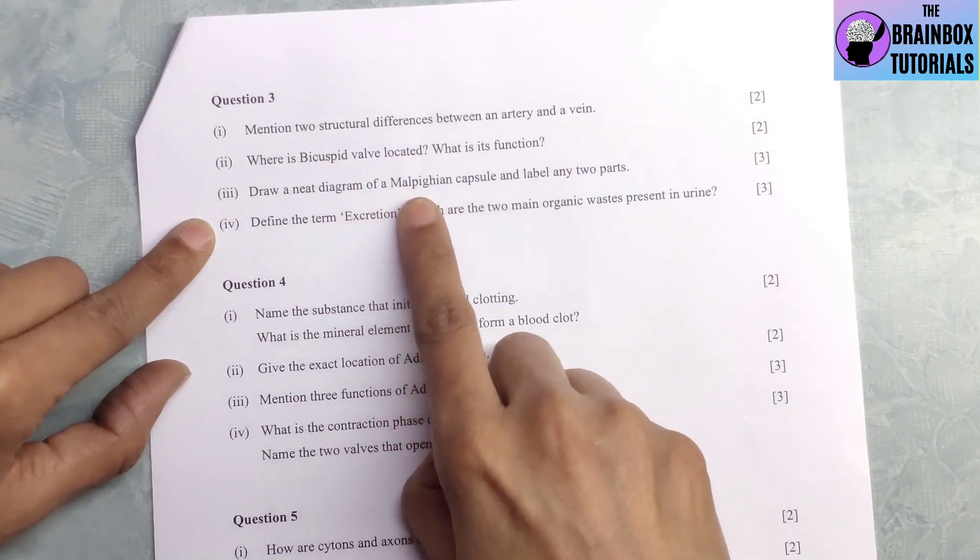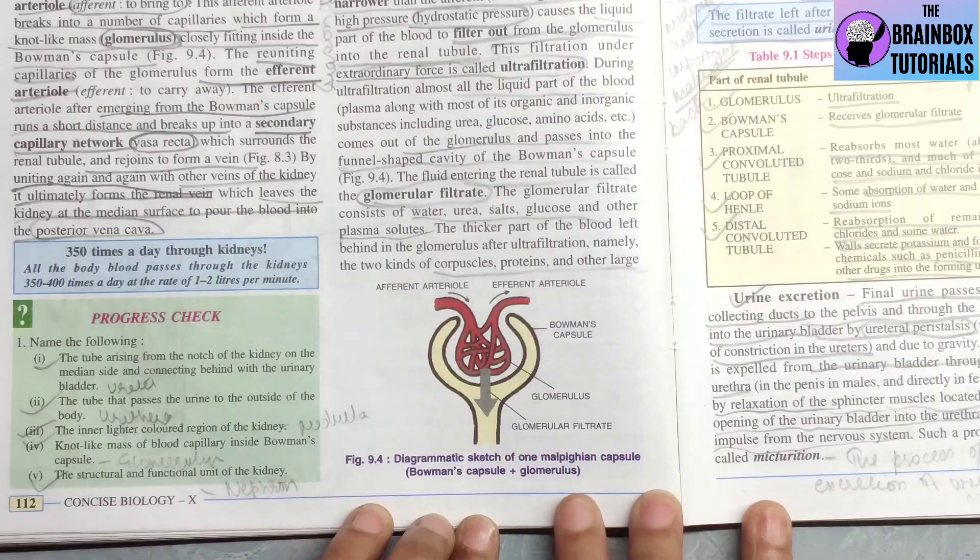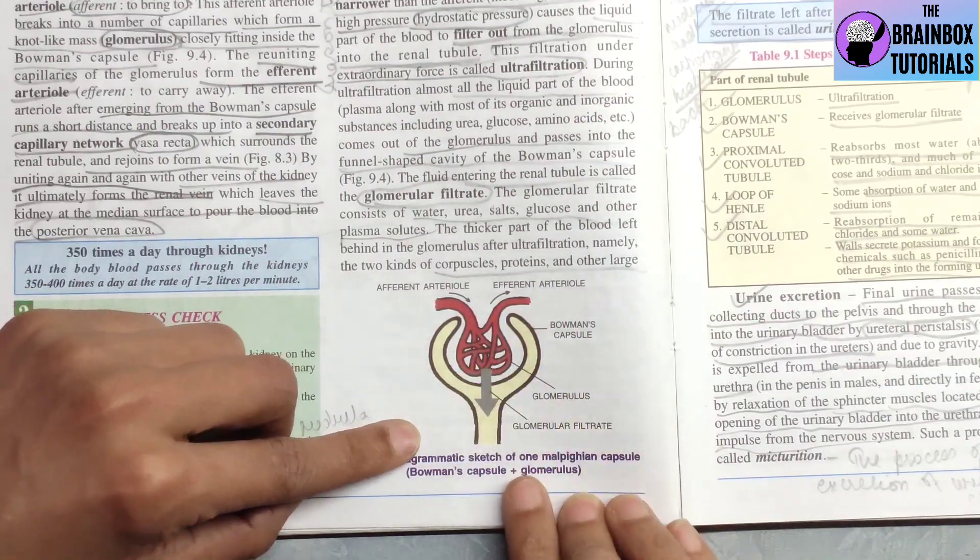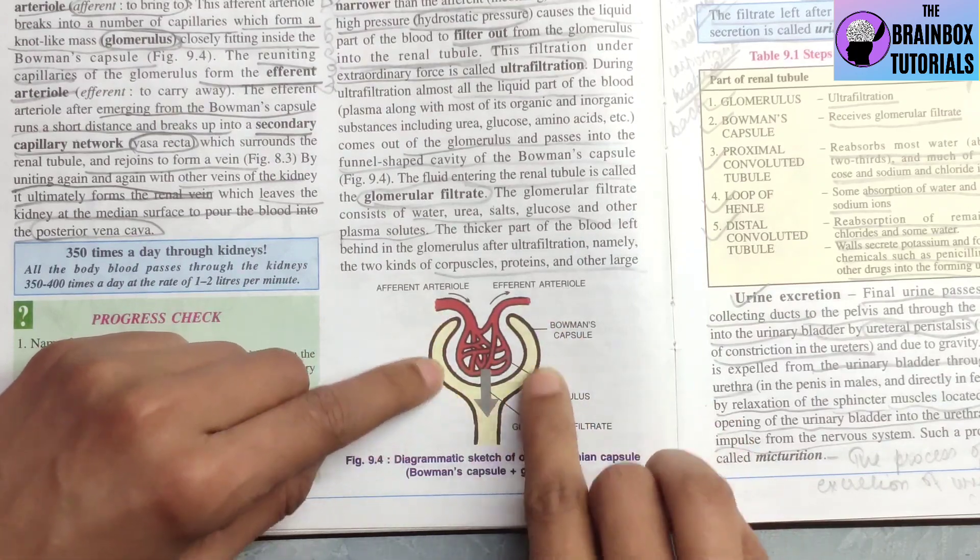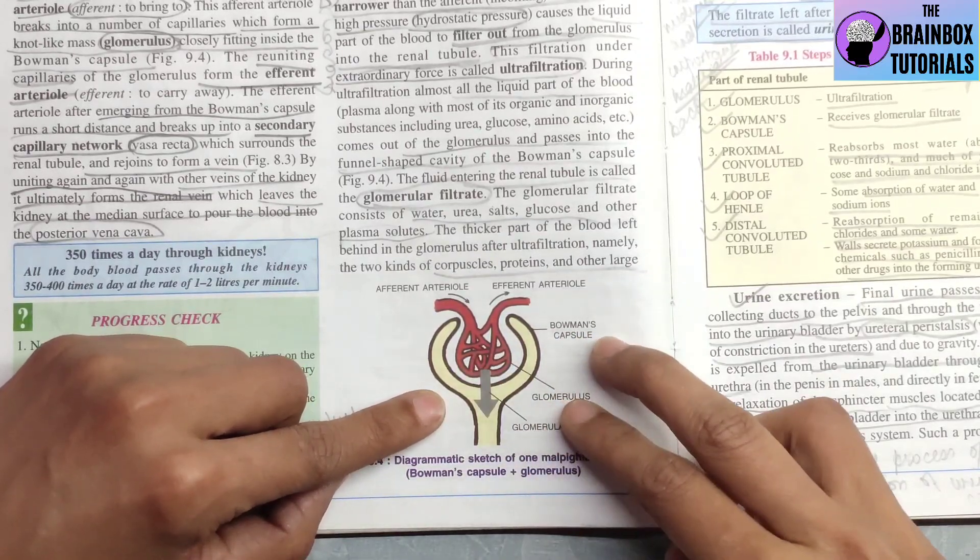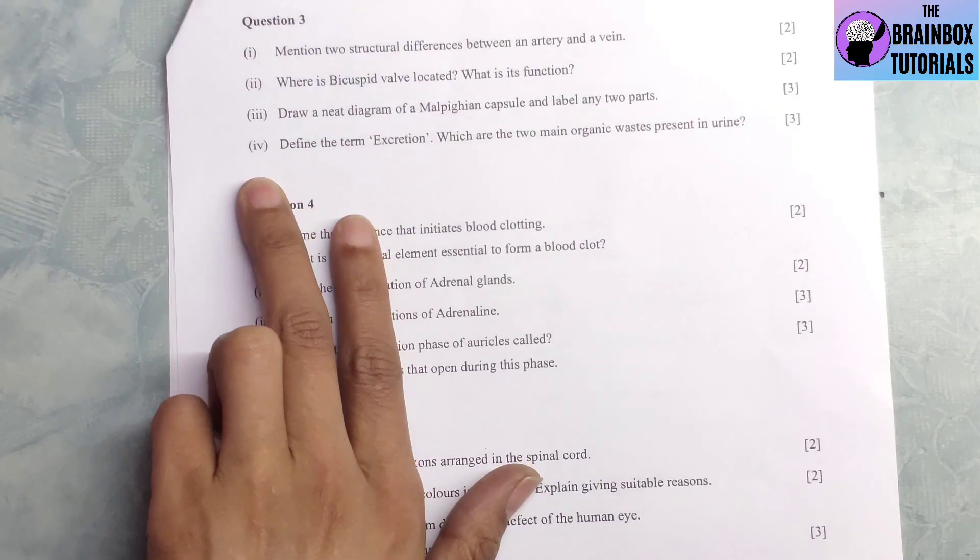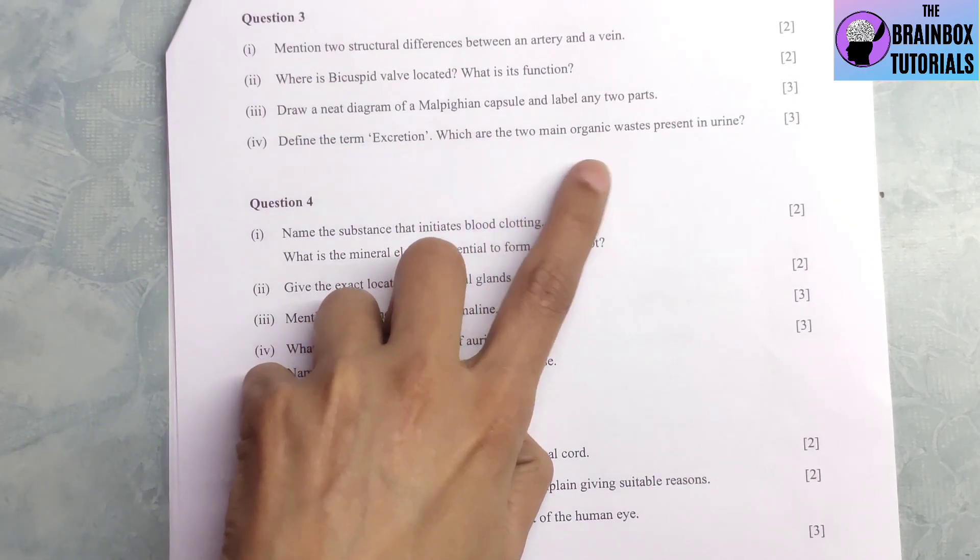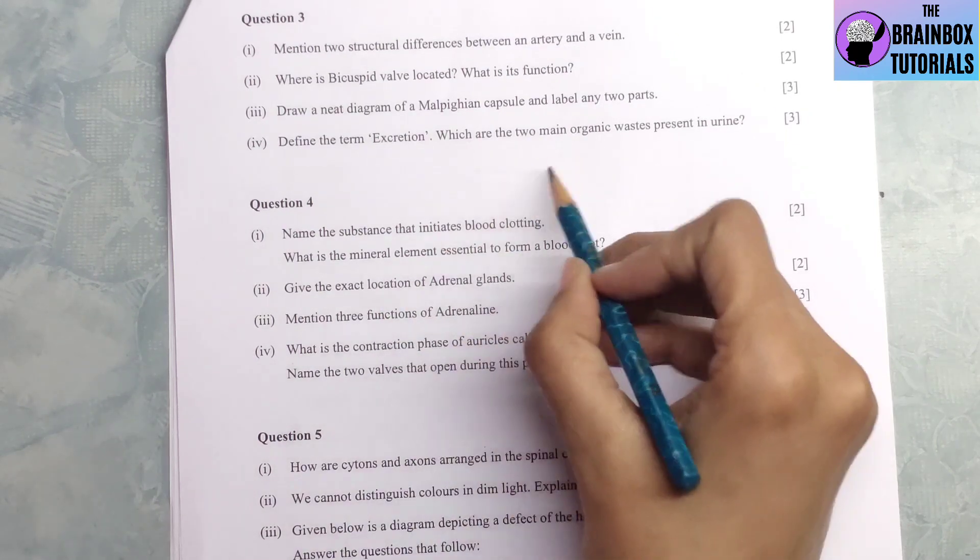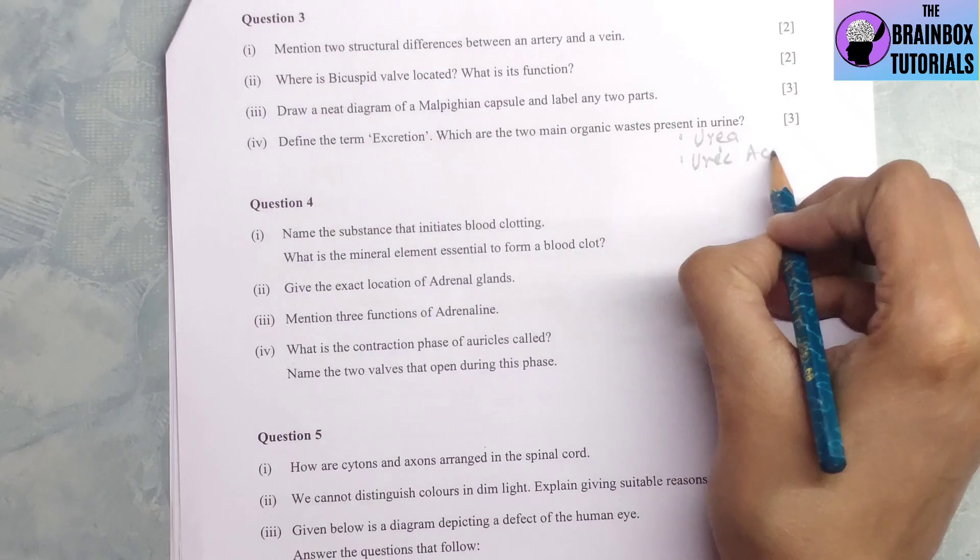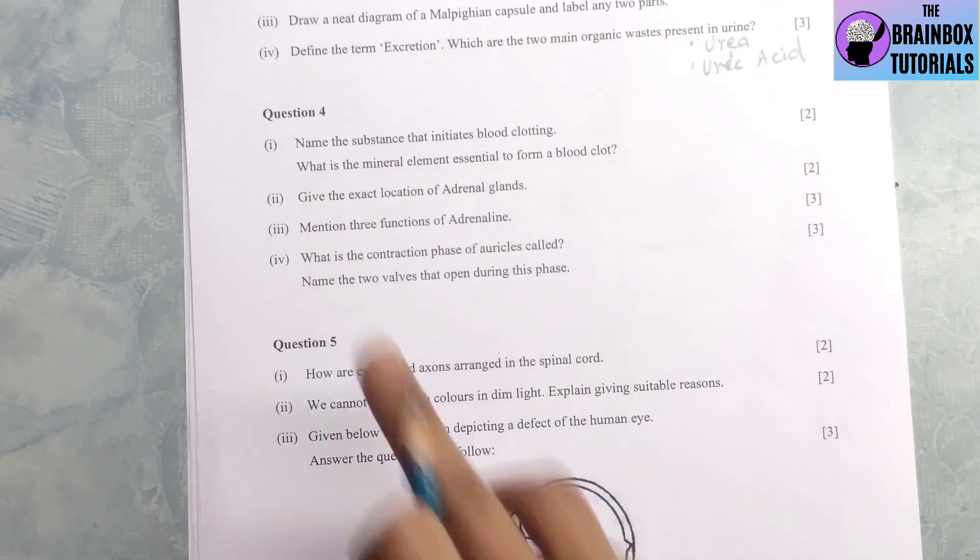Question number 3, draw a neat diagram of malpighian capsule and label any two parts. This is the diagram of the malpighian capsule and you will have to label any two parts. See, this part, the wrench-like shape is Bowman's capsule and inside that is glomerulus. These two parts you can label. Question number 4, define the term excretion. The process of removal of chemical waste from the body is known as excretion. The next question, which are two main organic waste present in urine? The two main organic waste present in urine are urea and uric acid.